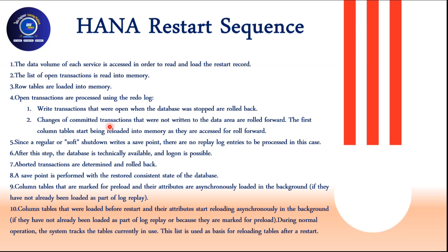Whenever you do a soft shutdown, the advantage is that before you shut down, a savepoint is triggered. Whatever changes you have in your database memory are stored to disk - stored in persistence in a consistent state. The moment you start up your database, the database will come up immediately because it will open up the persistence. When you start the database, it tries to open the persistence; if the data is all there, you don't need to do a log replay, which means startup is very quick.